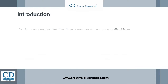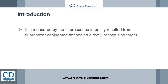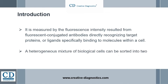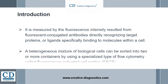Predominantly, it is measured by the fluorescence intensity, resulted from fluorescent conjugated antibodies directly recognizing target proteins, or ligands specifically binding to molecules within a cell. Based on the properties of cells, a heterogeneous mixture of biological cells can be sorted into two or more containers by using a specialized type of flow cytometry called fluorescence-activated cell sorting.